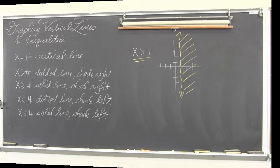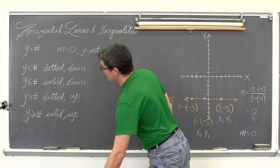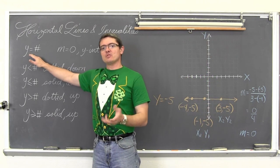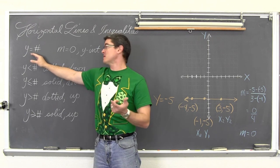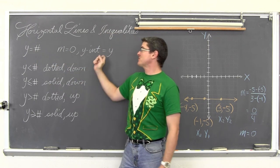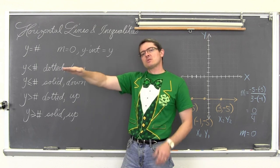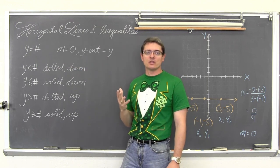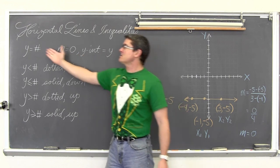BAM! So for horizontal lines and inequalities, y equals the number, as you might expect now that we have watched the first part of the video, is for horizontal lines. They have slopes of zero, and the y intercept, since it is horizontal and thus the y value now is never going to change, the y intercept is the y value.